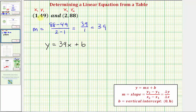And because these two points are on our linear function, they must satisfy this equation. So we can select one of these ordered pairs, perform substitution, and then find b, the y-intercept. So let's use the first point. We'll substitute 49 for y and one for x. So we'd have 49 equals 39 times x, which is one, plus b. So we have 49 equals 39 plus b. Subtracting 39 on both sides, we have b equals 10.